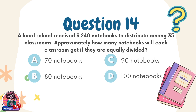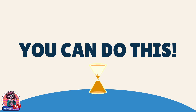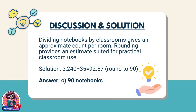Question 14. A local school received 3,240 notebooks to distribute among 35 classrooms. Approximately how many notebooks will each classroom get if they are equally divided? Choices: A. 70 notebooks, B. 80 notebooks, C. 90 notebooks, D. 100 notebooks. Discussion: Dividing notebooks by classrooms gives an approximate count per room. Rounding provides an estimate suited for practical classroom use. Solution: 3,240 ÷ 35 = 92.57, round to 90. Answer: C. 90 notebooks.